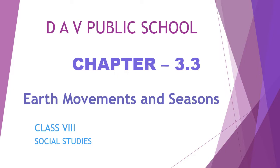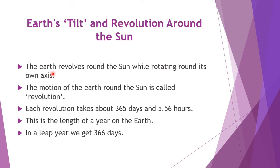What is the revolution of the earth? The movement of the earth around the sun. Earth's tilt and revolution around the sun — the earth is revolving around the sun while rotating around its own axis. Along with rotating on its own axis, it is also revolving around the sun. That motion is called revolution of the earth.